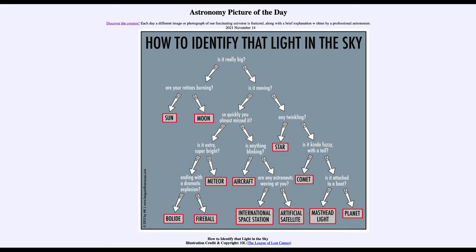It is titled 'How to Identify That Light in the Sky.' So what do we see here? Well, here's a little flowchart to help you identify things that you might see in the sky, and there are some whimsical sections to it as well. But if you look through it, you can actually work your way through to find out and identify what an object is in the sky.